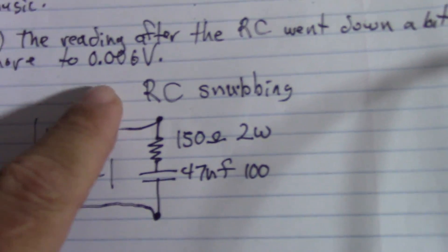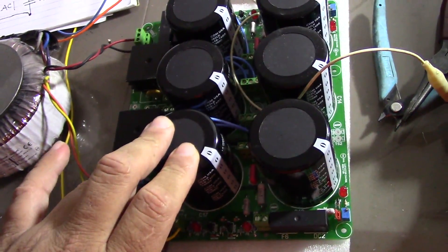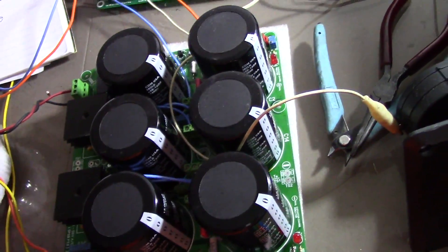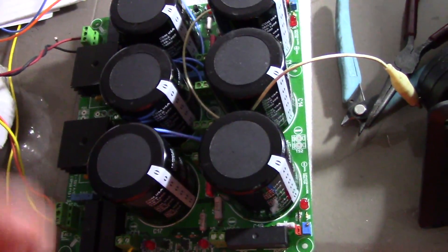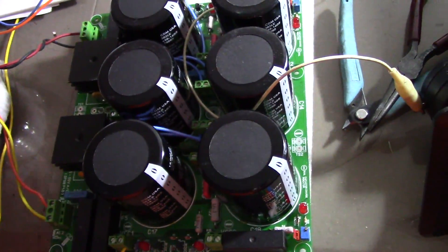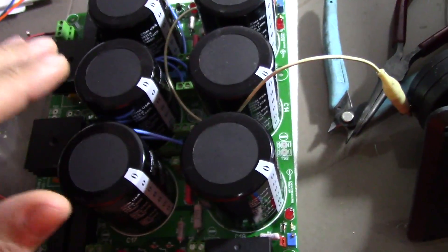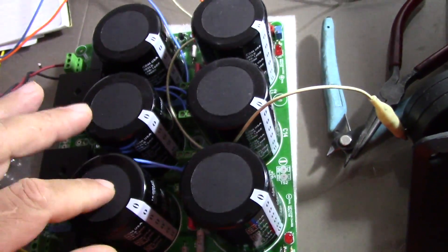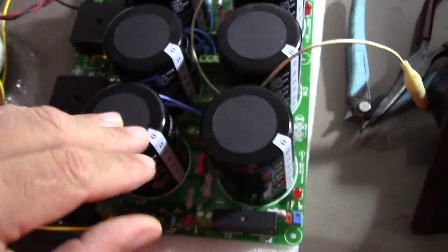The reading after the RC went down a bit more to 0.006 volts. Listening to music yesterday was a really pleasant experience because of not hearing the hum sound. After the music stopped and goes down to the end, you cannot hear any hum at all. I'm really glad the sound was really precise with the bass, the instruments, the battery. It was really nice. I really enjoyed listening to music for a few hours yesterday.